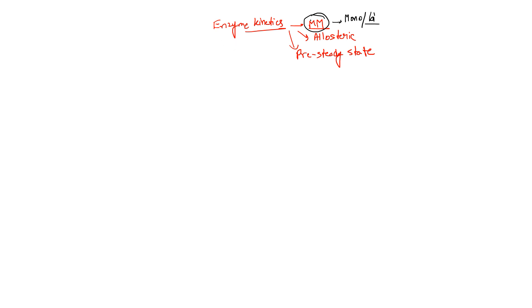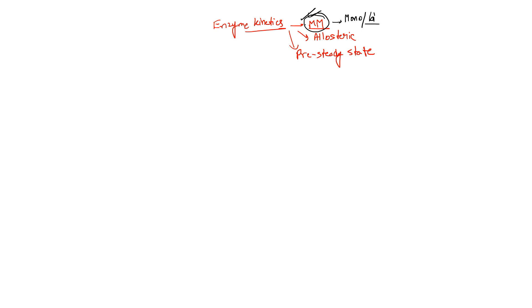We will talk about Michaelis-Menten kinetics in detail because it is the most common type — most enzymes follow this kinetics. Whenever you take a biochemistry book you always hear the term Michaelis-Menten equation. You also see various graphs and curves that seem confusing. When I was a student starting to read biochemistry, I also found these things really confusing, and that's what I'm going to discuss today.